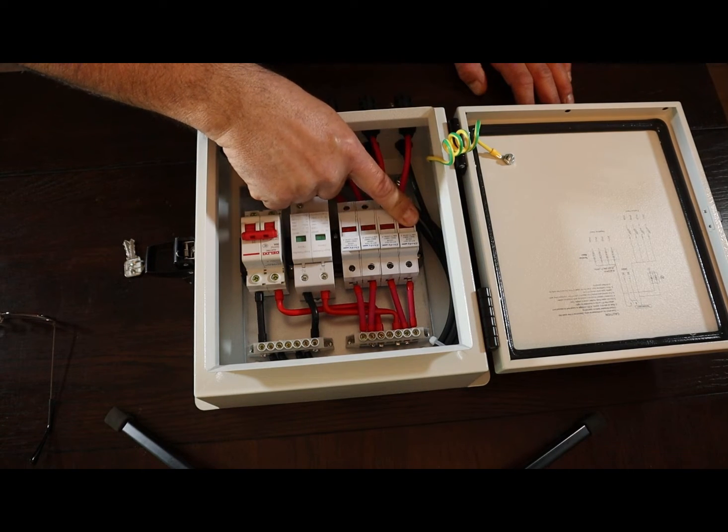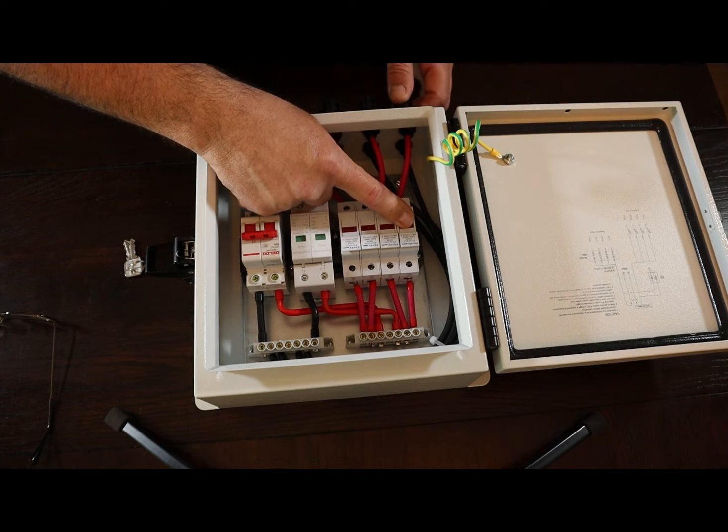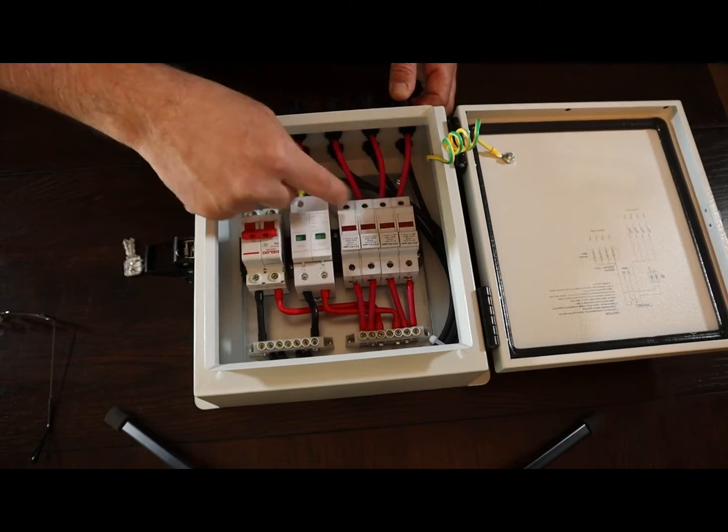Either one panel and run four in parallel. Or I will run two in series and then parallel and run a 24 volt system. But for right now, I only have one panel. So I'm going to be using the one. And as I grow, I'll be connecting more and it will run in series.